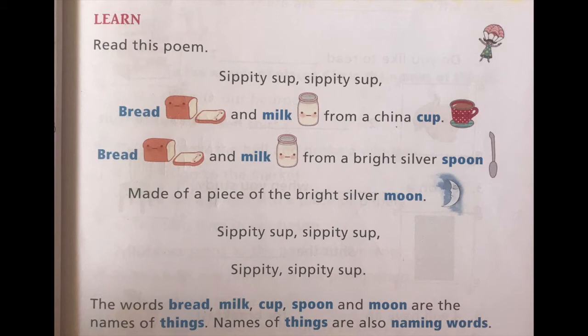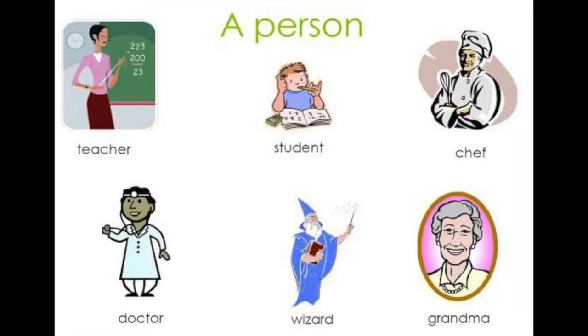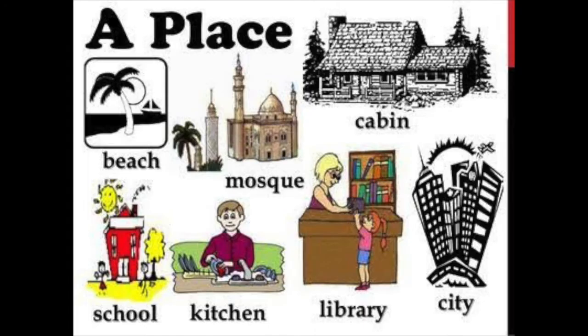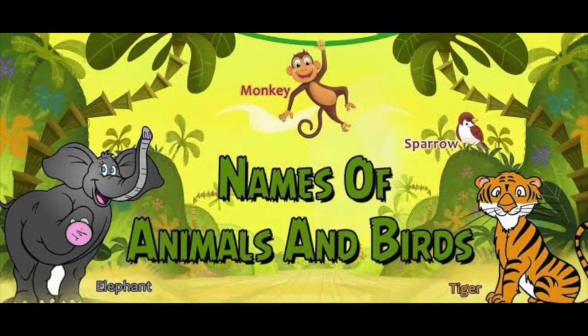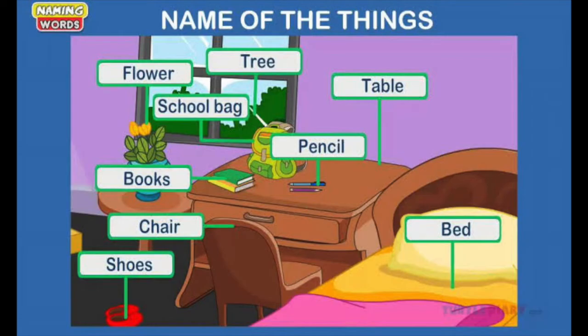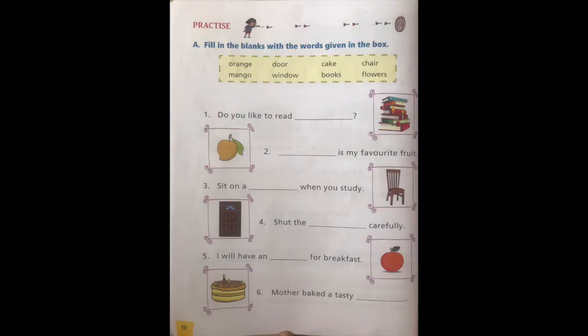So once again to revise: what are naming words? Names of people, places, animals and birds, and things. All right. Now let's turn to page number 16.